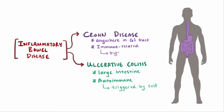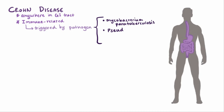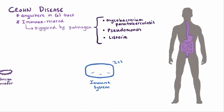In Crohn disease, the immune system is thought to be triggered by some foreign pathogen in the gastrointestinal tract. Several pathogens have been implicated, like Mycobacterium paratuberculosis, as well as Pseudomonas and Listeria species. So the immune system is reacting to foreign pathogens.